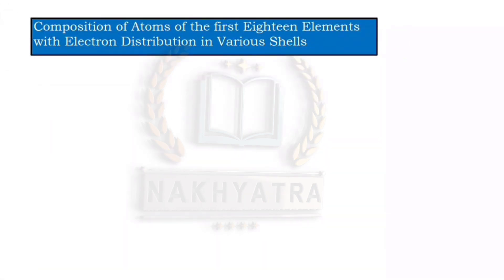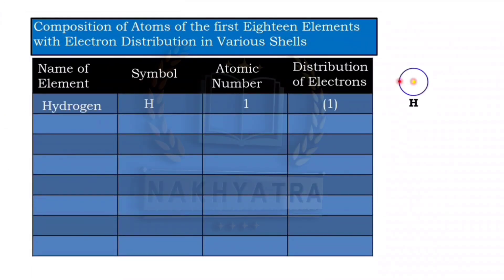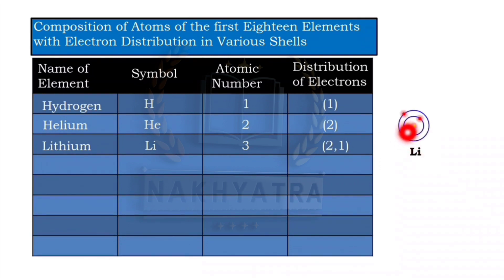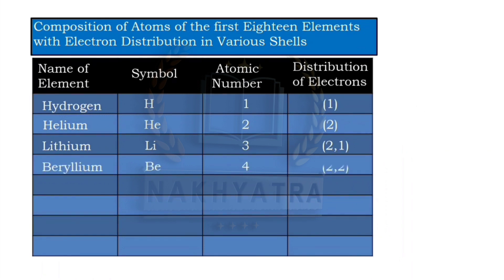The first element, hydrogen, has one electron which is filled in the first shell. The second element, helium, has two electrons, both filled in the first shell. For the third element, lithium, the first shell is already filled with two electrons, so the third electron moves to the second shell.